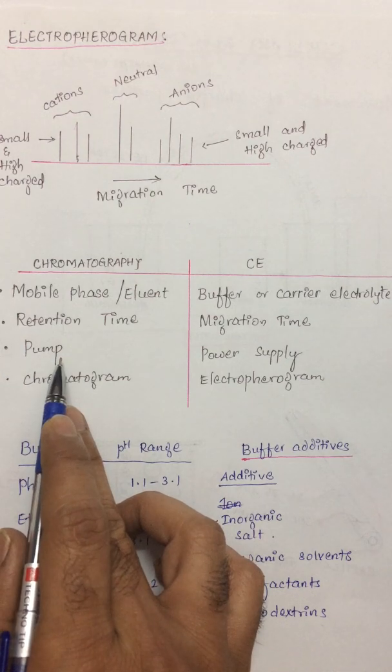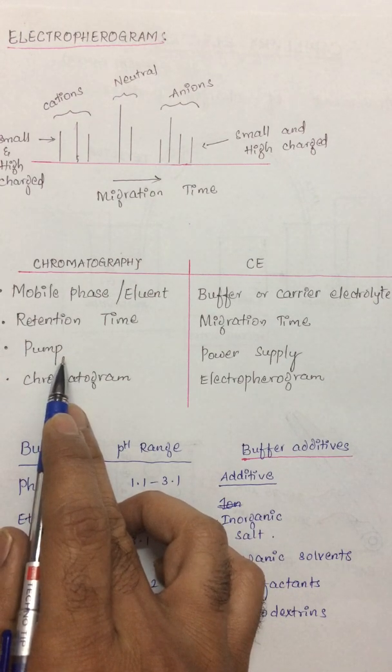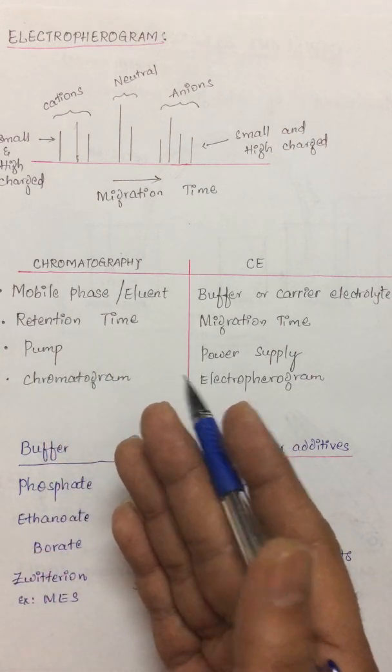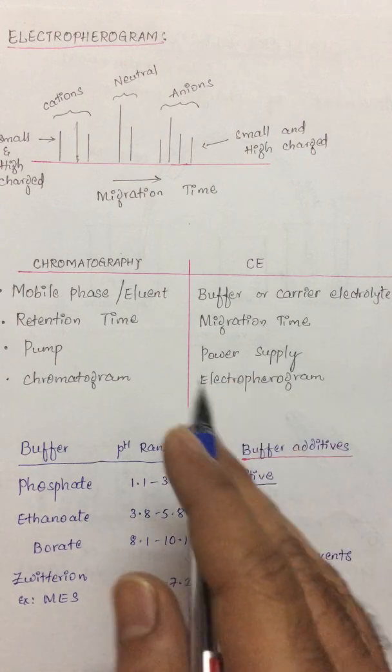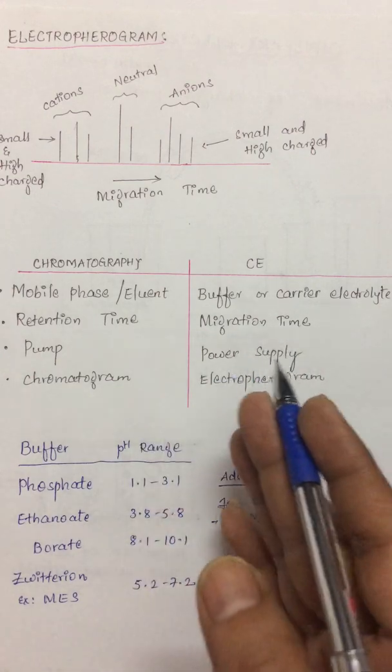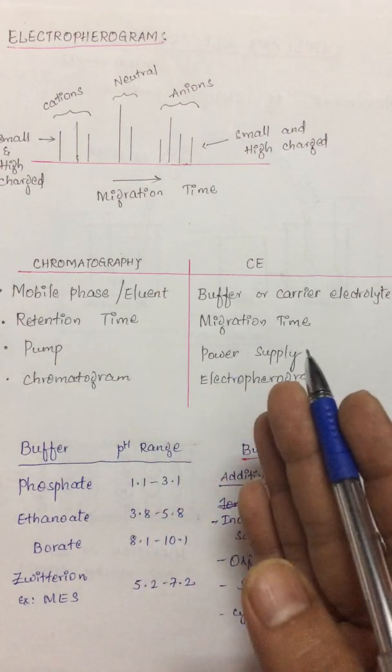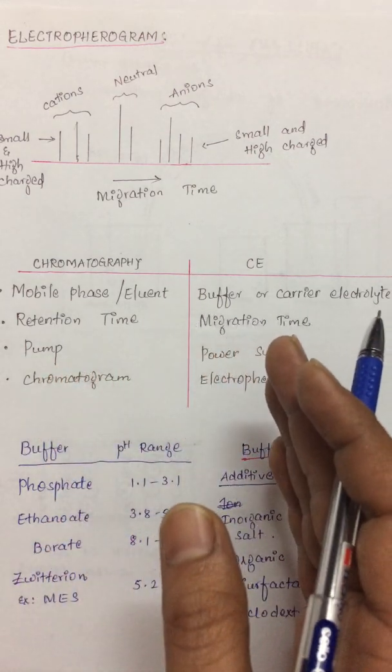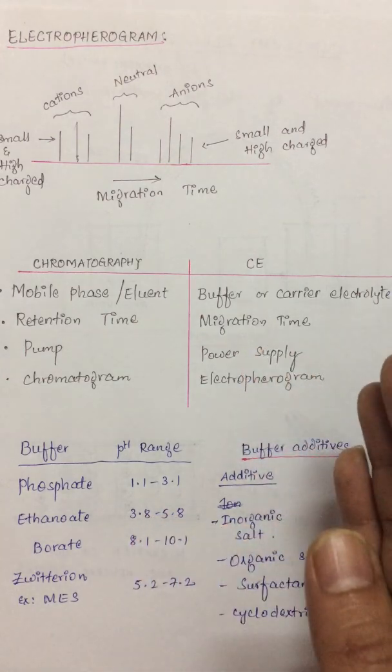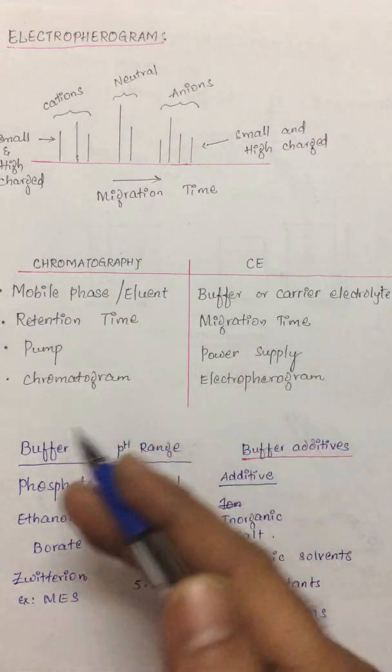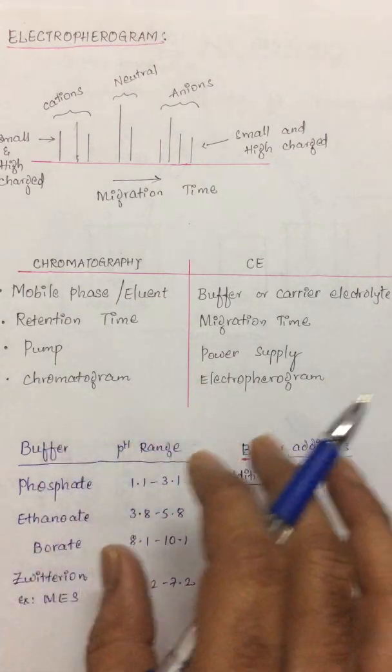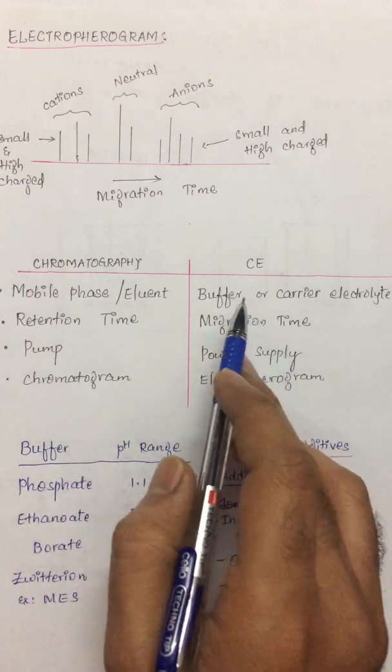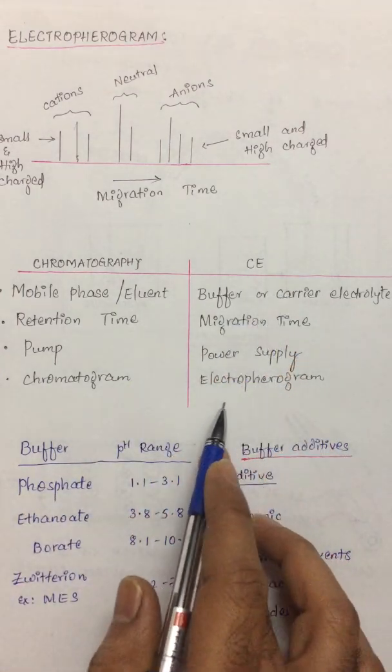The analyte has to be pumped, or if it is gas chromatography diffusion process is carried out. In the case of capillary electrophoresis power is supplied and in the presence of this power supply the ions and neutral species will move towards the cathode due to the electro-osmotic flow. Once the analyte gets separated we get a graph. In chromatography it is called a chromatogram whereas in capillary electrophoresis we call it an electropherogram.